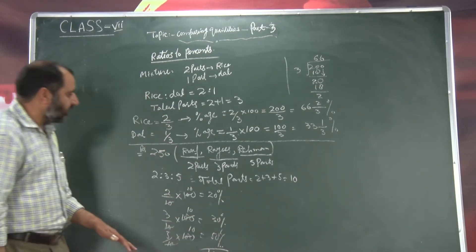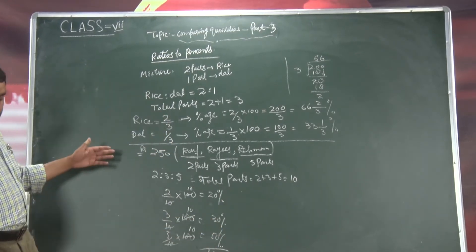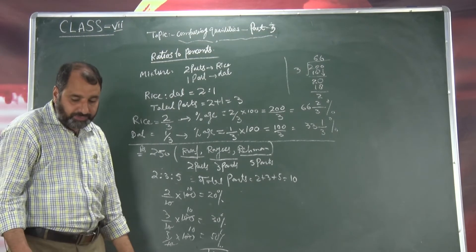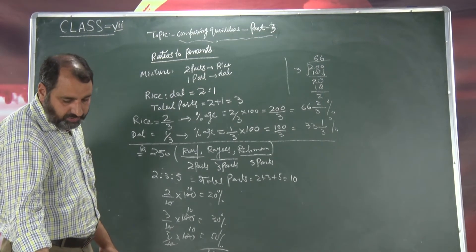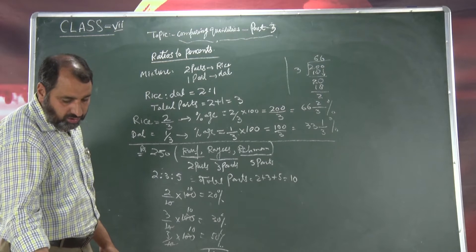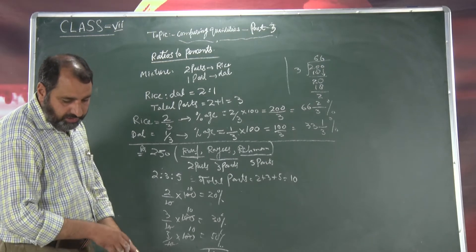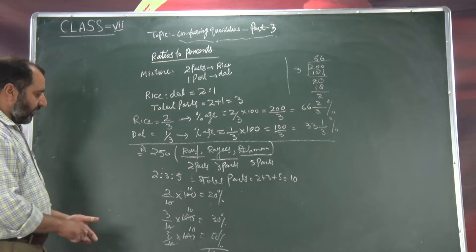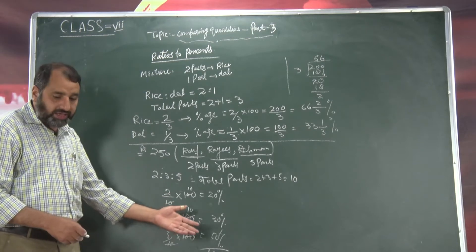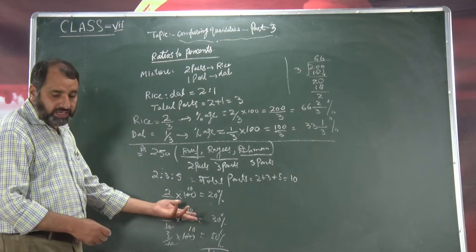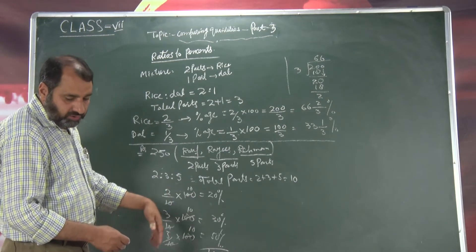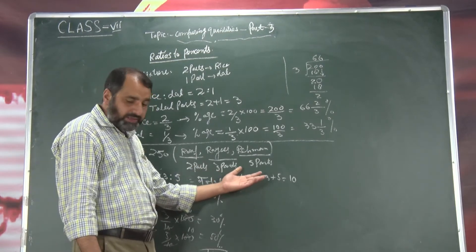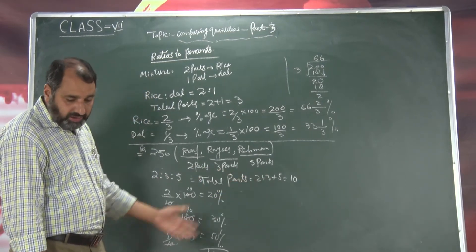So 100 percent. Is tarikay se hum ratios ko convert karte hai into percent mein. Ratios ko hum convert karte hai into percent mein. Ab dekhinge ki amount kitna liya hai — ye to ho gaya percent. Ab dekhinge ki amount kisne kitna liya hai. Two parts amount kitna bantah hai, three parts amount kitna bantah hai, five parts amount kitna bantah hai.